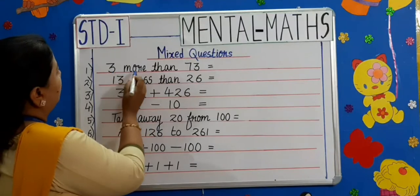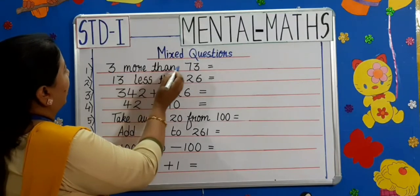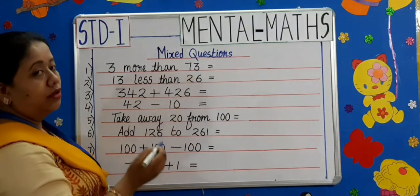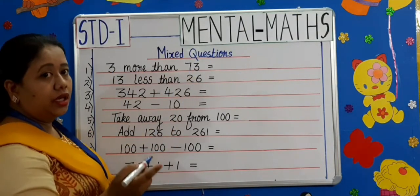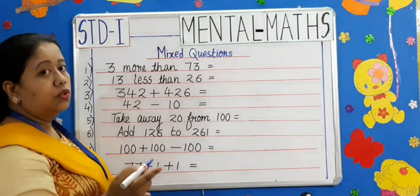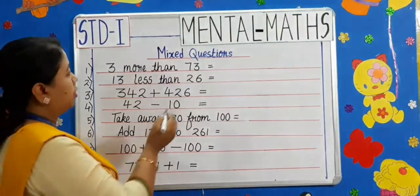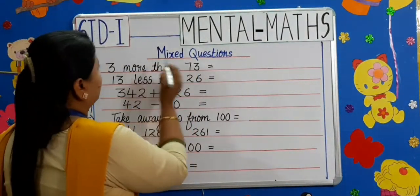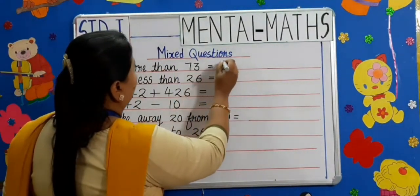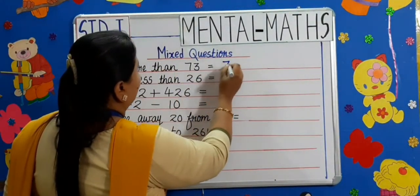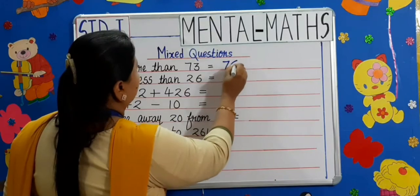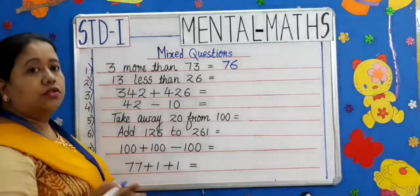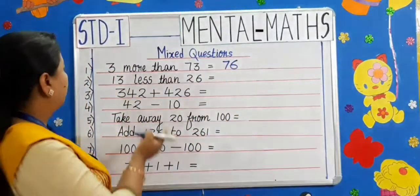The first question: 3 more than 73. Children, here we have to do addition. 73 plus 3 is 76.